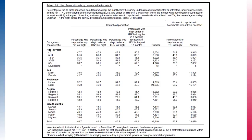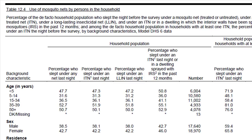For example, many tables about insecticide-treated nets are limited to de facto subpopulations — those who stayed in the household the night before the survey. In the model dataset, the table on use of mosquito nets by persons in the household states at the beginning that it shows the percentage of the de facto population who slept the night before the survey under a mosquito net, treated or untreated. For some tables, it doesn't explicitly say de facto, but you can tell it is limited to de facto members because the table is restricted to those who stayed in the household the night before the interview.